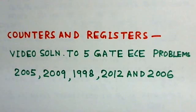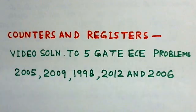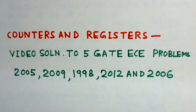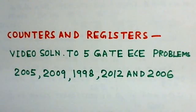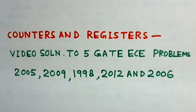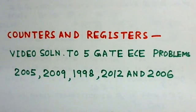The first problem is from GATE 2005 and is based on the ripple counter. One has to determine the next state of the counter, which has three T-type flip-flops. Since ripple counter is the starting topic in counters, this problem has been placed first.